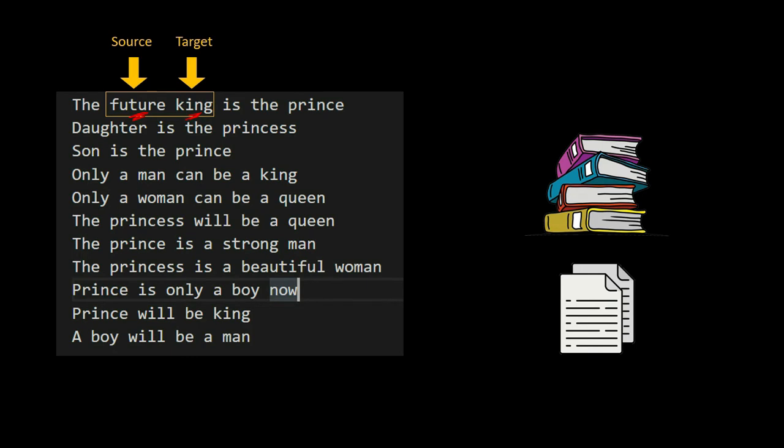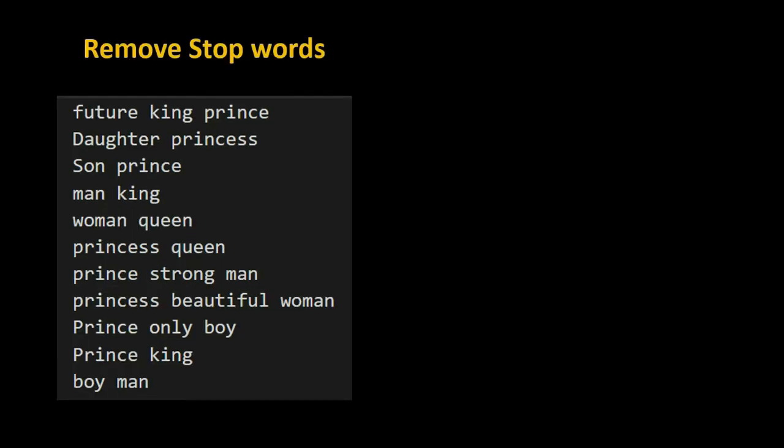To generate these word pairs, we first remove stop words from the data. Stop words are words that occur often in a language or sentence but do not add any meaningful information to our model. For example, words like 'the,' 'is,' and 'are' occur often but do not offer meaningful information, so we remove them.